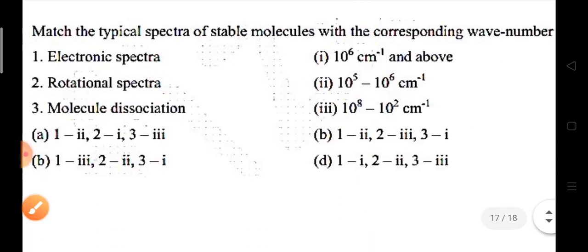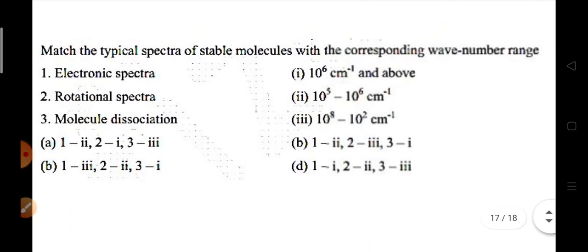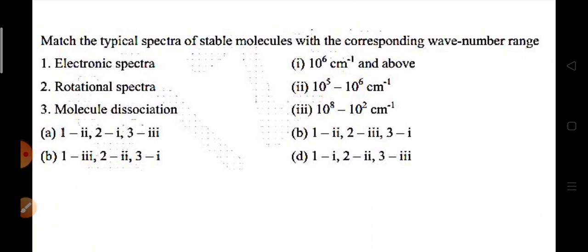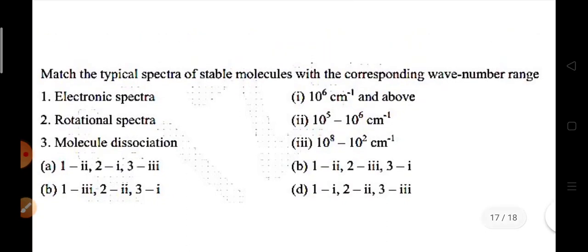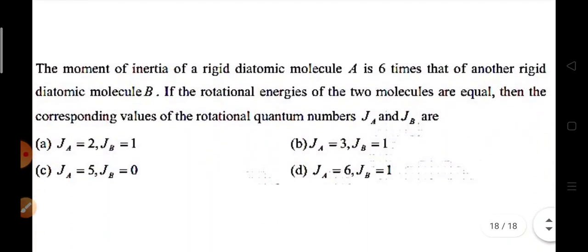Now for homework — please pause the video and note this down. The first homework question is: match the typical spectra of stable molecules with the corresponding wave number range — electronic spectra, rotational spectrum, and molecular dissociation. The second homework question is: the moment of inertia of rigid diatomic molecule A is 6 times that of rigid diatomic molecule B. If the rotational energies of the two molecules are equal, find the corresponding values of rotational quantum numbers J_A and J_B.